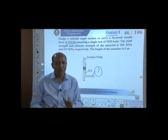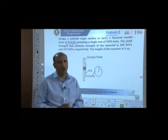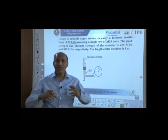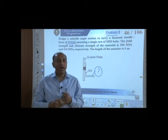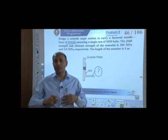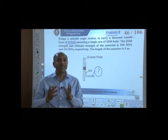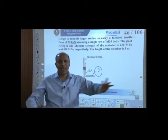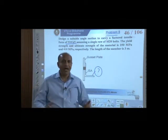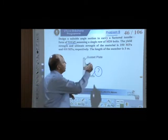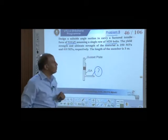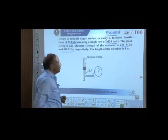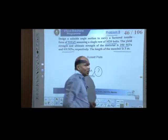There is a force given. This particular connection or angle should carry a factored force of 210 kN. Please understand: is it a factored load or a working load? In our design calculations we always take the factored load. So here it is 210 kN factored load. We are using M20 bolts — 20 mm diameter. The yield strength, ultimate strength of the material, and the total member length of 3 meters are also given.